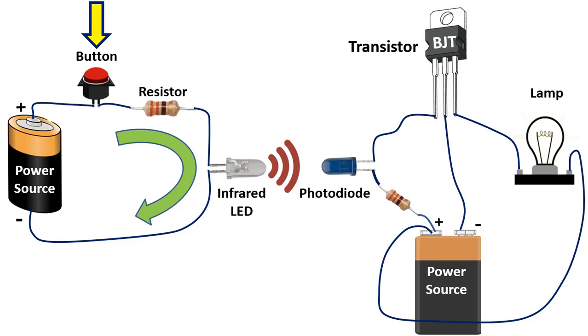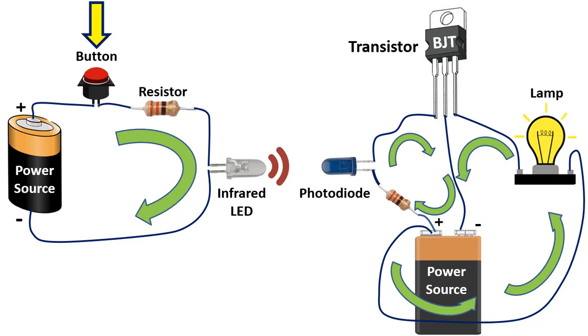When we press the button in the circuit on the left, a current will flow through this circuit and the infrared LED will emit an infrared light. With this light, the photodiode in the circuit on the right will be short circuited, and the current will flow through this circuit and the transistor will be triggered with a small current. Then a current will pass through this circuit and the lamp will light up. Thus, we wirelessly control a larger current with a small current.